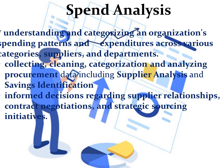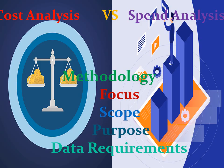The second type is spend analysis, whose focus is on understanding and categorizing an organization's spending patterns and expenditures across various categories, suppliers, and departments. It involves collecting, cleaning, categorizing, and analyzing procurement data, including supplier analysis and savings identification, to gain insight into where and how an organization is spending its money. It helps procurement professionals make informed decisions regarding supplier relationships, contract negotiation, and strategic sourcing initiatives.